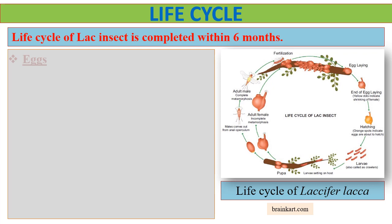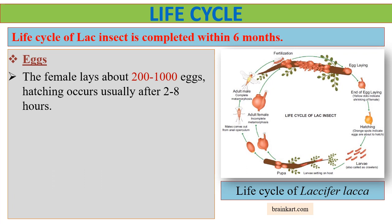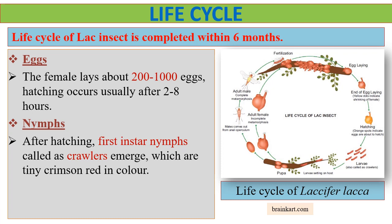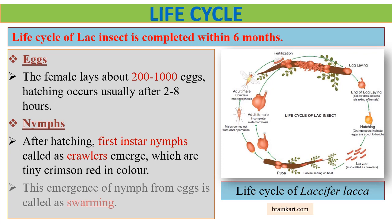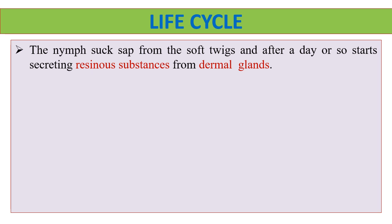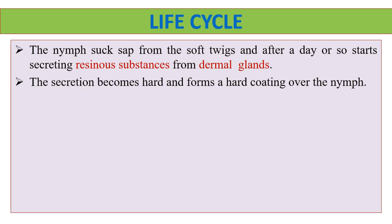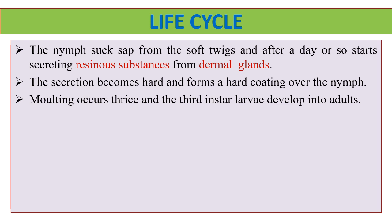The female lays about 200 to 1000 eggs. Hatching occurs usually after 2 to 8 hours. After hatching, first instar nymphs called crawlers emerge, which are tiny crimson red in color. This emergence of nymph from eggs is called swarming. The nymph then sucks sap from the soft twigs and after a day or so, starts secreting resinous substances from dermal glands. The secretion becomes hard and forms a hard coating over the nymph.